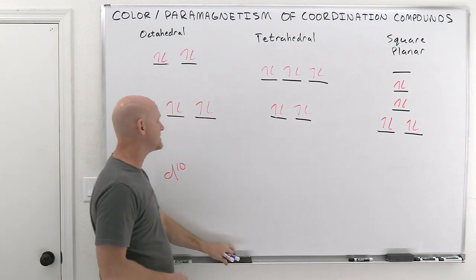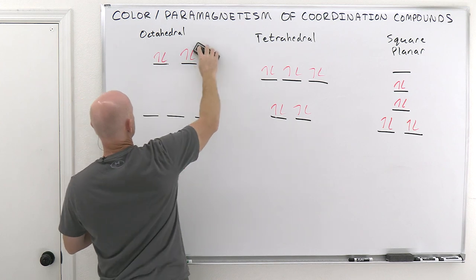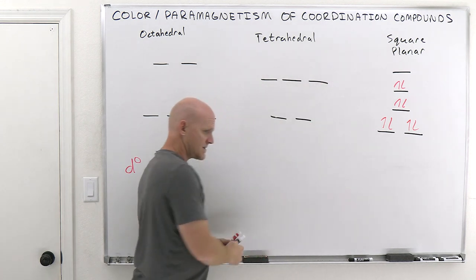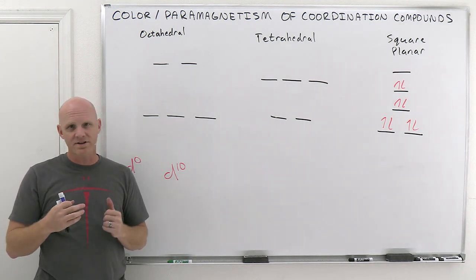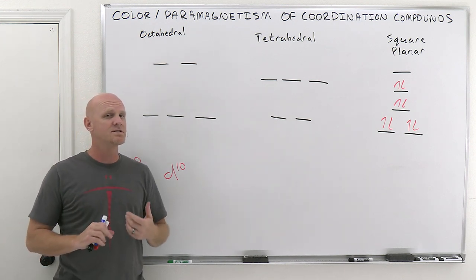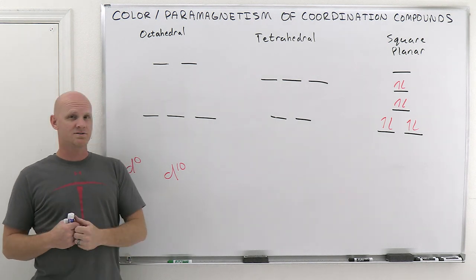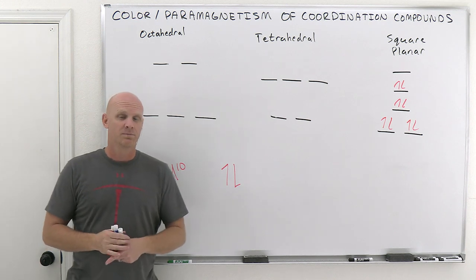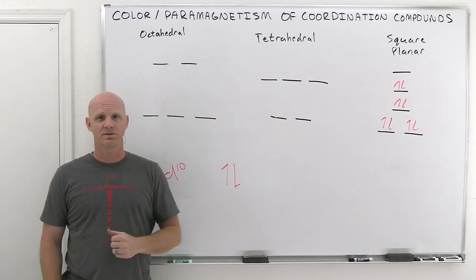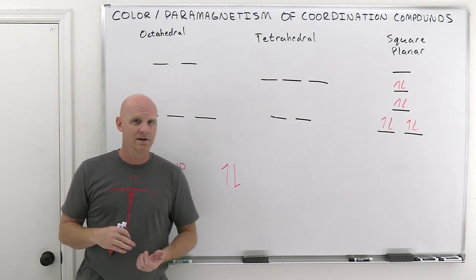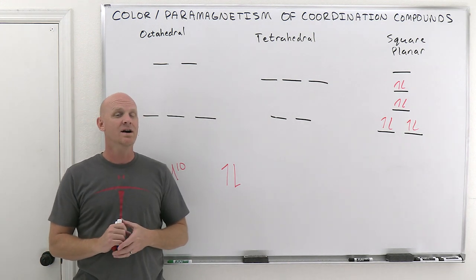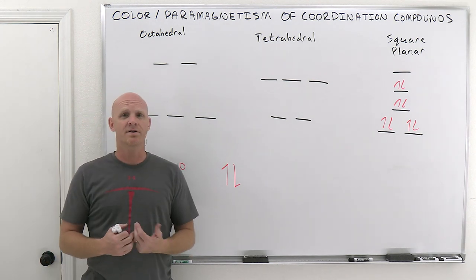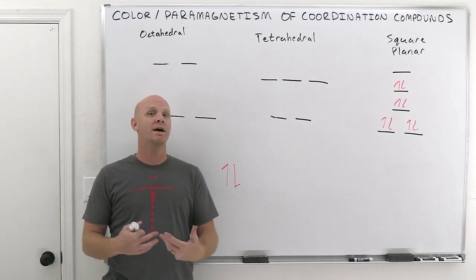Now we've got to talk about paramagnetism and diamagnetism. These are different from ferromagnetism — the magnetism we associate with iron in terms of little areas with aligned spins. This is related to the spins of unpaired electrons. Electrons have a spin associated with them — either spin up or spin down. When you pair up electrons, their spins cancel each other out. So to have an overall spin associated with an atom, you've got to have unpaired electrons, and that leads to a state we call paramagnetism. The more unpaired electrons you have, the more paramagnetic it becomes.